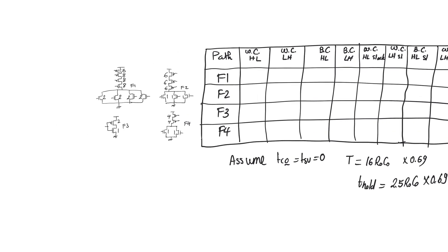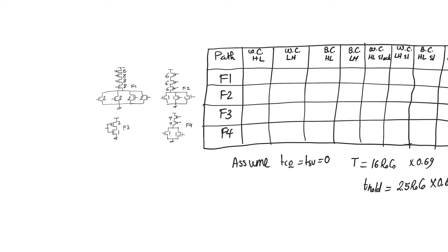For gate F1, self-loading on the output node is equal to 16 C0 and the resistance in low-to-high delay is R0. So we have 16 R0C0, which is the worst case low-to-high delay for F1. The worst case high-to-low delay for F1 observes a resistance of R0/2 because each NMOS is sized at 2. So a single branch in the pull-down network of F1 has a resistance of R0/2, giving us 8 R0C0 — showing asymmetric high-to-low and low-to-high delays for this gate.